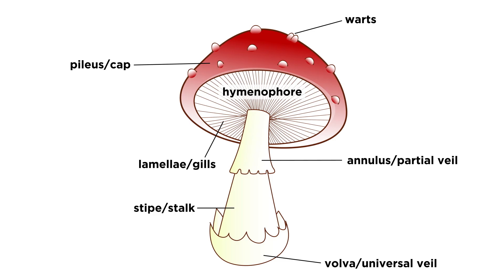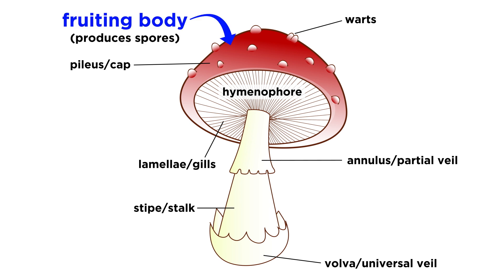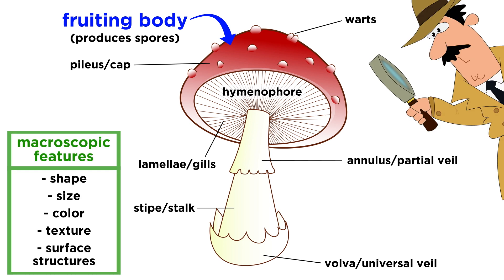All fungi have physical characteristics that can assist in accurate identification, and we have discussed a handful of these characteristics already. Mushrooms are actually the fruiting body, or spore-producing structure, of the fungus. Among all of the different species of fungi, fruiting bodies have an enormous diversity in physical traits. Traits that we can see with the naked eye are called macroscopic features. They include shape, size, color, texture, and surface structures.